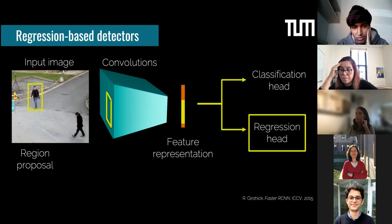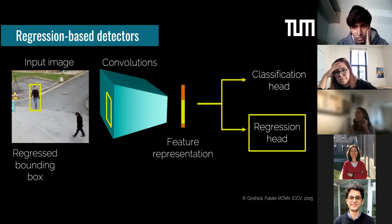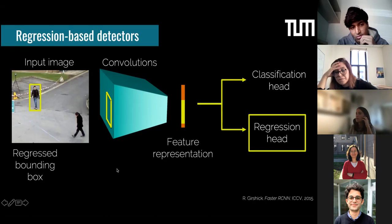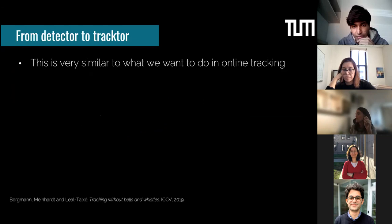The regression head is the interesting part for tracking. It takes a region proposal that might not be quite well located on top of the pedestrian and shifts it by a small amount so it is placed nicely around the pedestrian. So I have a box that was not well placed, and suddenly the regression head can regress a tight bounding box around the pedestrian. This is very similar to what we want to do in online tracking.